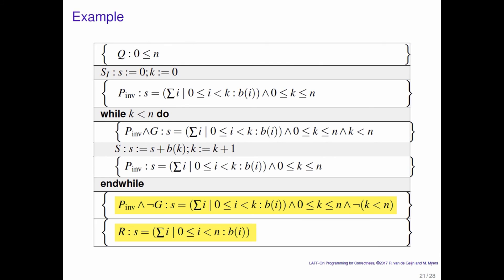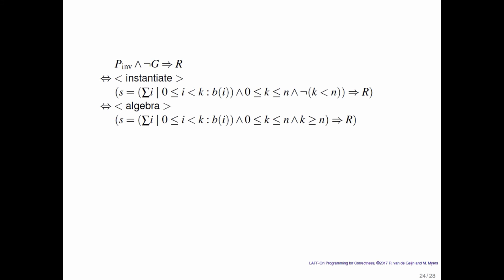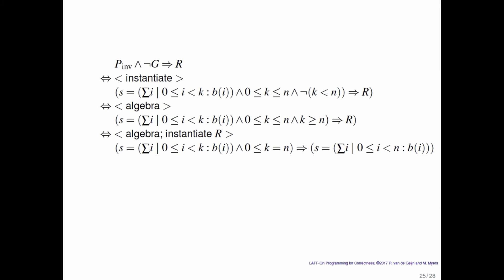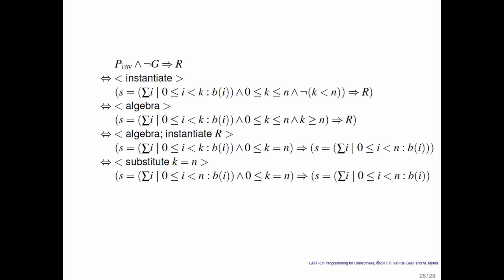Finally, you need to prove: if you come out of the loop where the loop invariant is true and the guard is false, does that imply you have computed the correct result? You instantiate, then do some algebra: not (k < n) means k ≥ n. Combined with k ≤ n from the loop invariant, you conclude k = n. You then instantiate R, and notice that on the left the range goes up to k and on the right up to n — but since k = n, you substitute in and apply weakening/strengthening to conclude this is true.